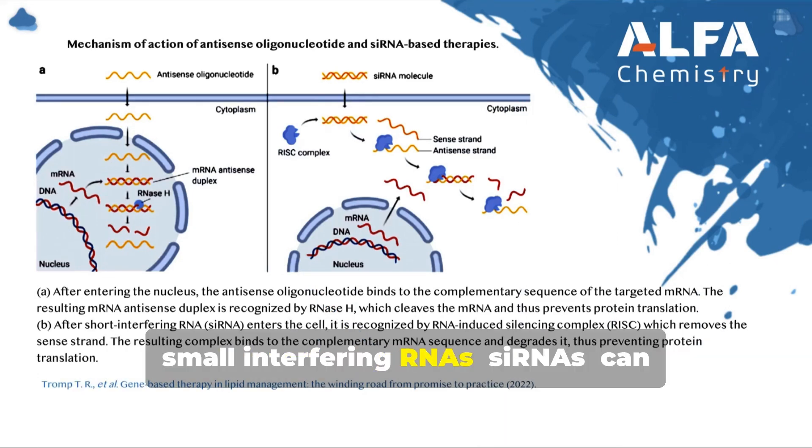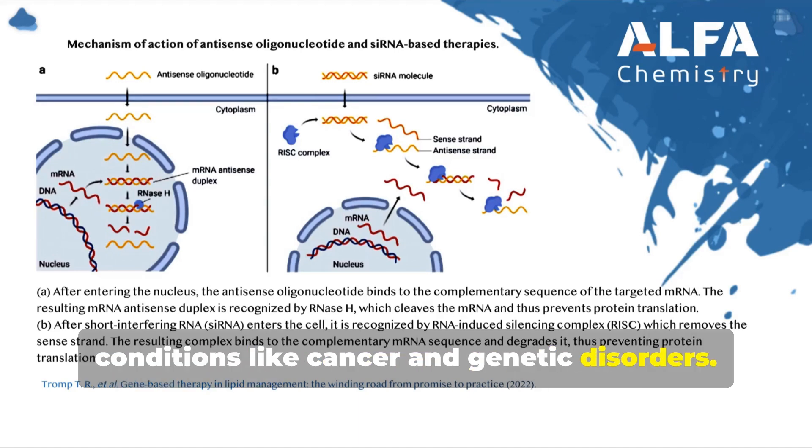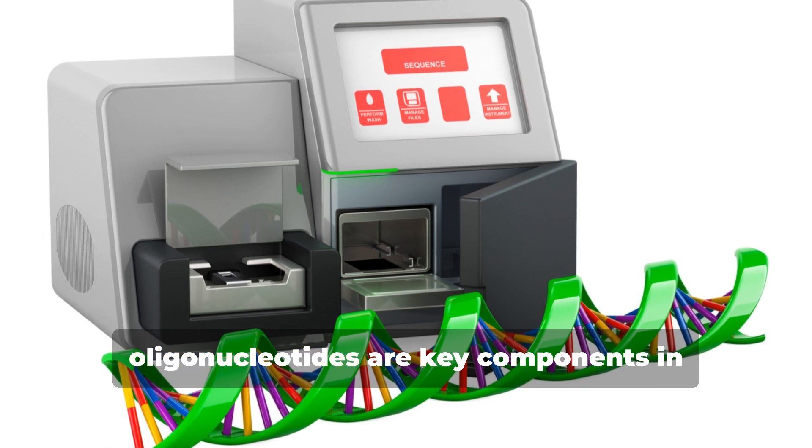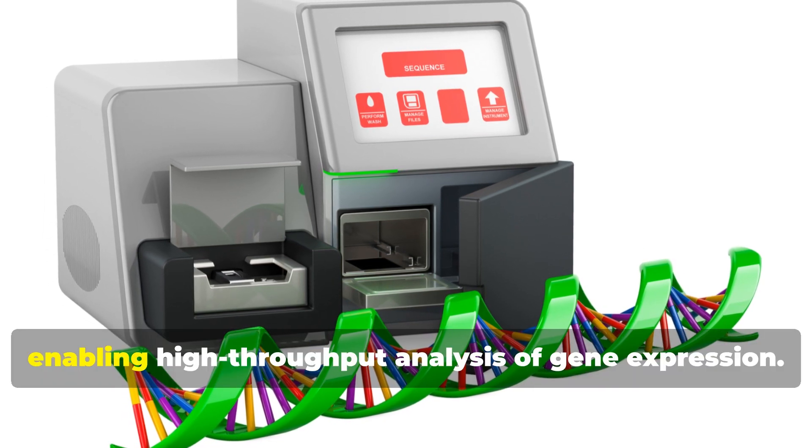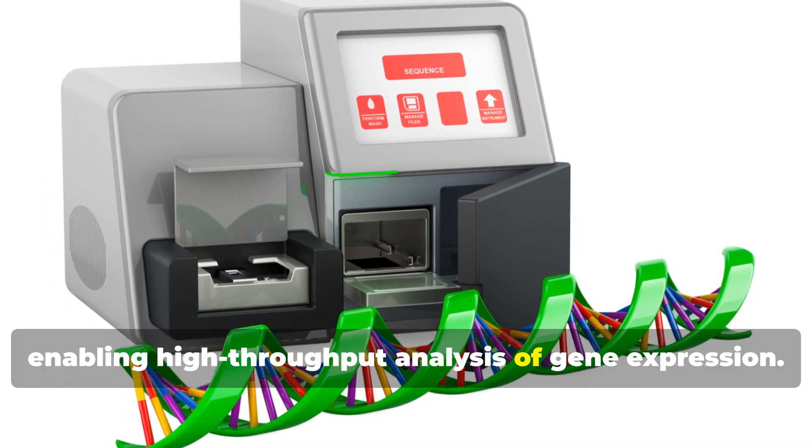Similarly, small interfering RNAs, siRNAs, can silence genes, offering potential treatments for conditions like cancer and genetic disorders. In genomics, oligonucleotides are key components in DNA microarrays, enabling high-throughput analysis of gene expression.